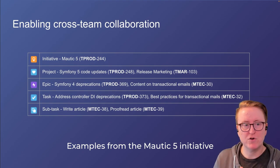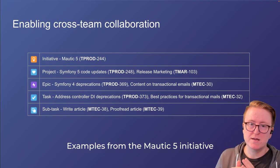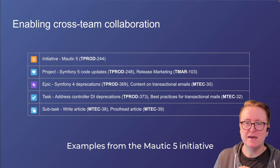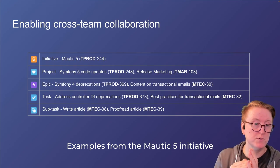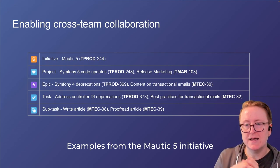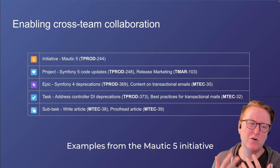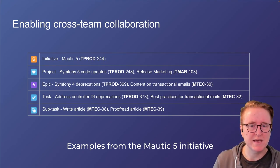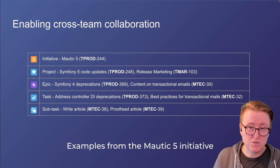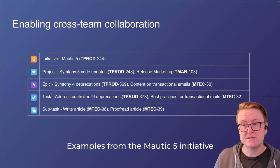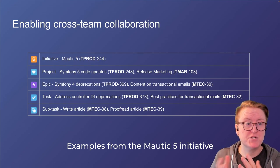The next level down, we've got the actual tasks — the specific things people have to work on within the epics. From the Symphony 4 deprecations, one task is addressing controller DI deprecations, which someone will physically pick up and post a pull request to fix. On the transactional emails side, there's a subtask for writing best practices for transactional emails. That task has subtasks for writing the articles, proofreading, design work for the visuals and images, and so forth.